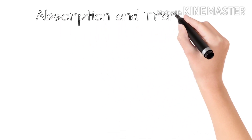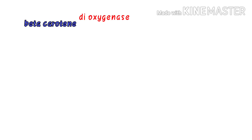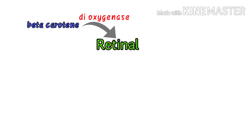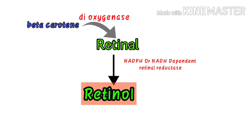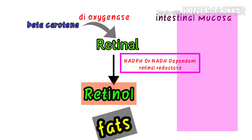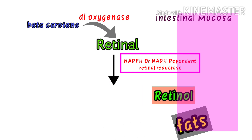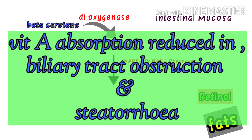Absorption and transport. Absorption: Beta-carotene is cleaved by a dioxygenase to form retinal, further reduced by an NADPH or NADH dependent retinol reductase present in intestinal mucosa. It is absorbed along with other fats and requires biliary salts. Vitamin A absorption is reduced in biliary tract obstruction and steatorrhea.